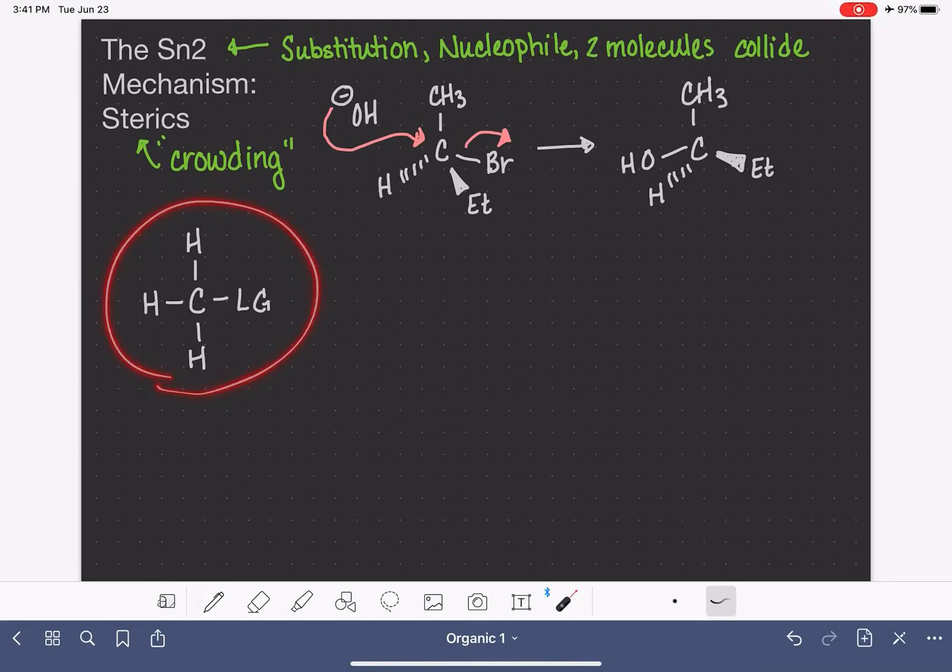This particular type of electrophile or substrate is going to react very, very fast because it is not crowded. Very fast to react by SN2 because there is no crowding at that center carbon.